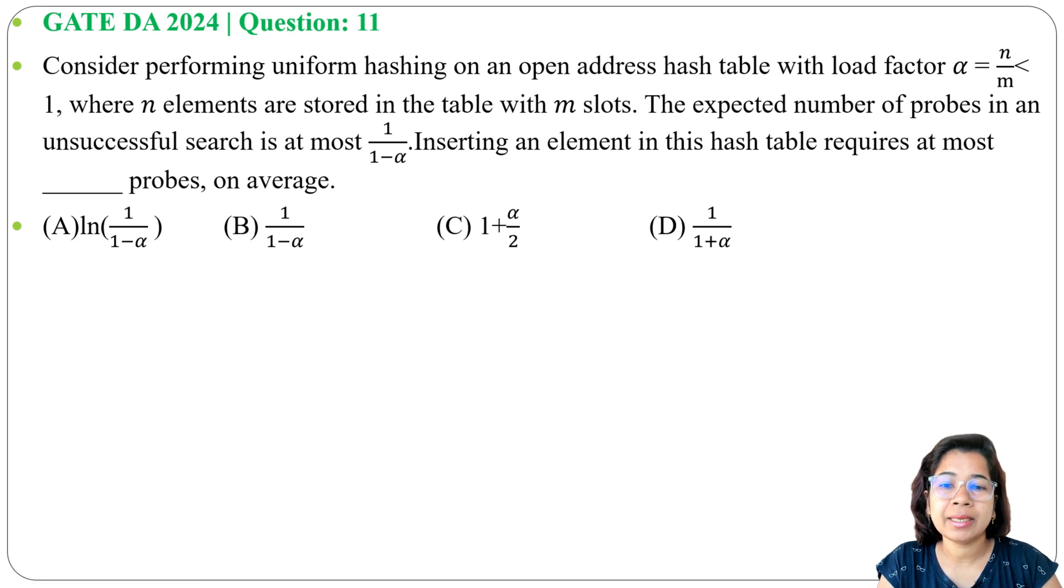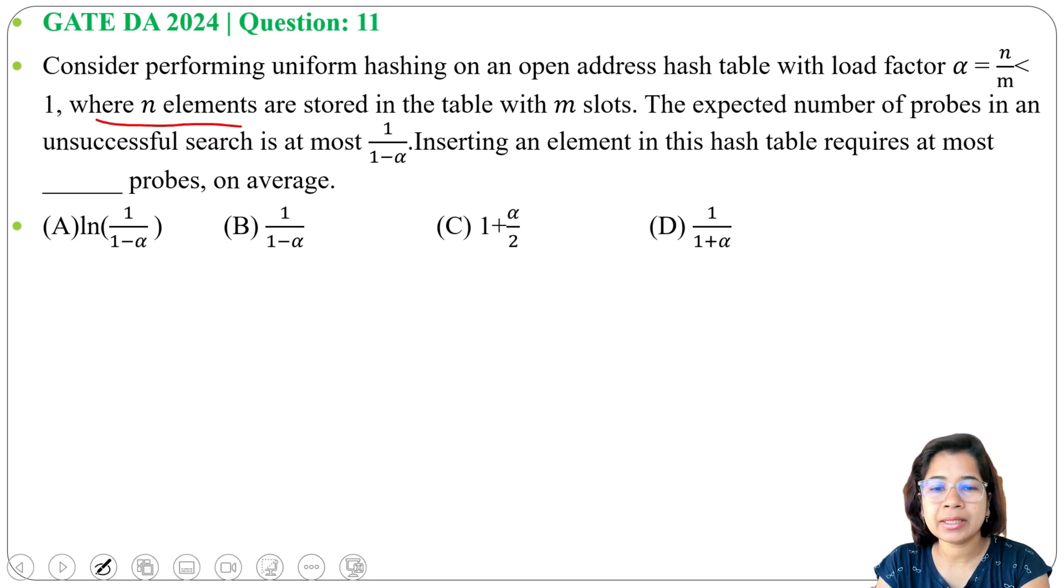So what is uniform hashing? In uniform hashing we evenly distribute the elements into the hash table. So here n is the elements and m is the hash table slots. Suppose n equals to 8 and m equals to 10.